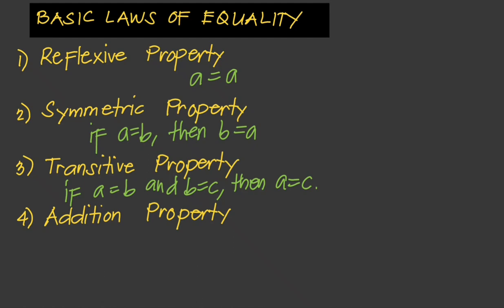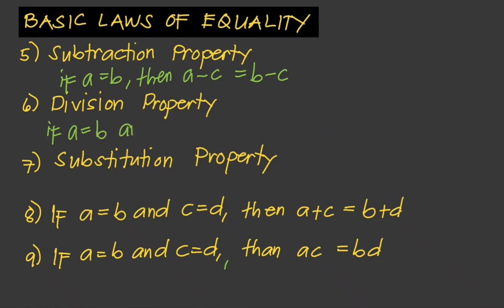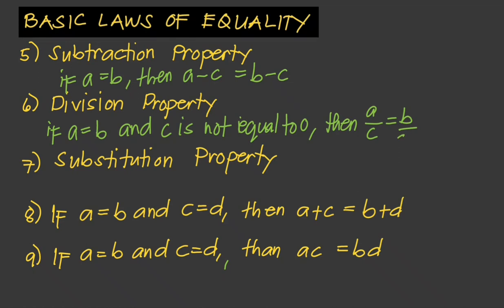The next one is the transitive property of equality: if A equals B and B equals C, then A equals C — that is, things equal to the same thing are equal to each other. The addition property of equality: if A equals B, then A plus C equals B plus C. The subtraction property of equality: if A equals B, then A minus C equals B minus C. The division property of equality: if A equals B and C is not equal to zero, then A over C equals B over C.